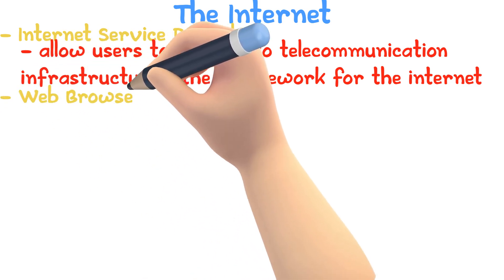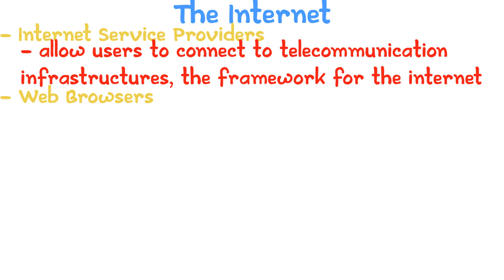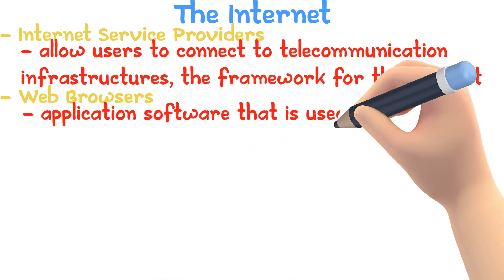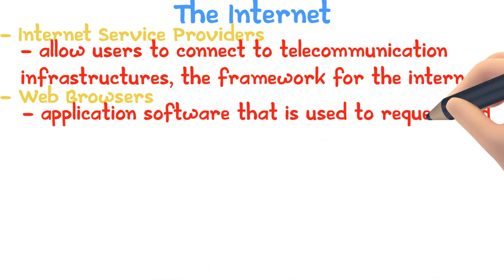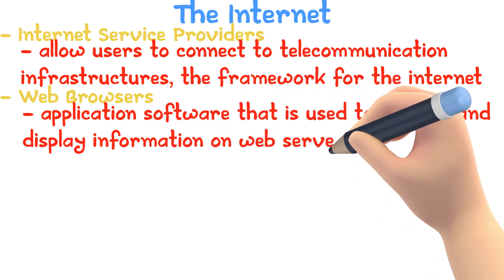A web browser is an application software that is used to request and display information on web servers. You might be using a web browser right now. Examples are Opera, Google Chrome, and Microsoft Edge.